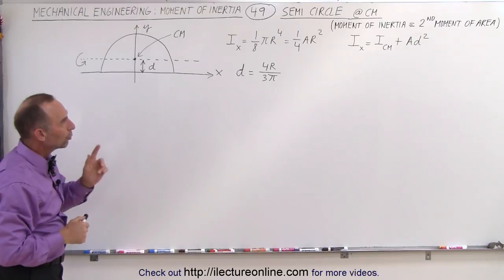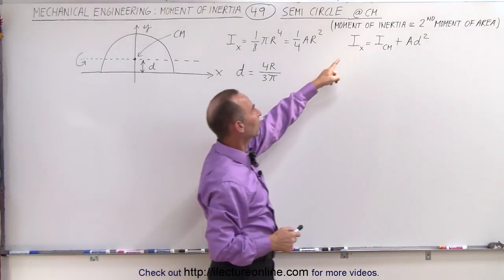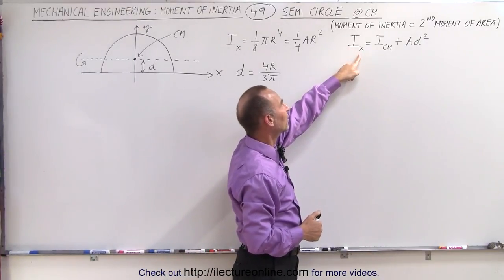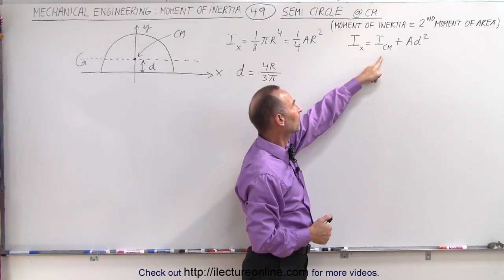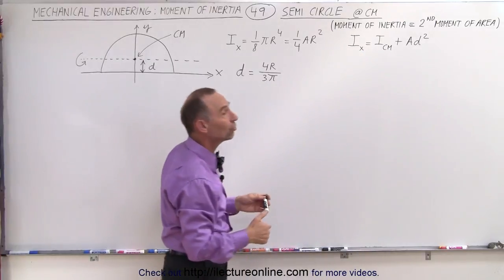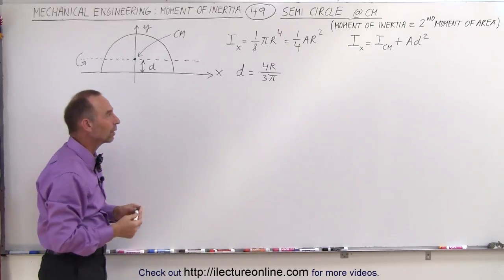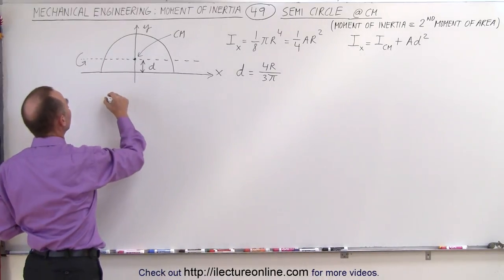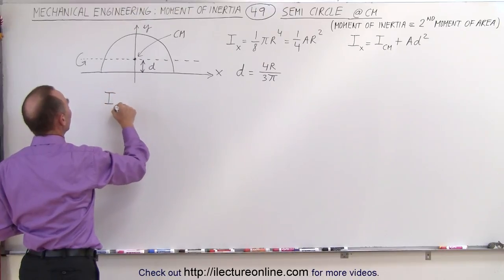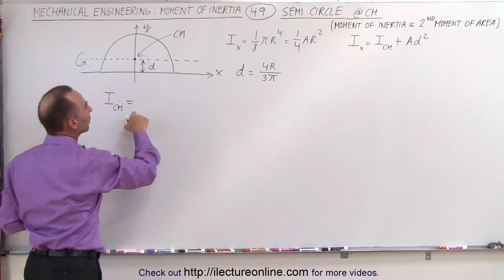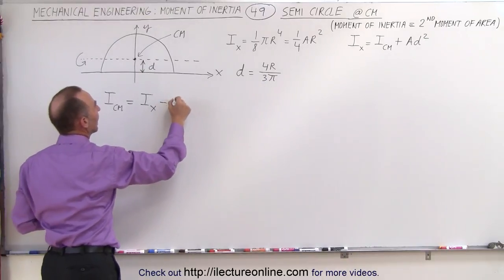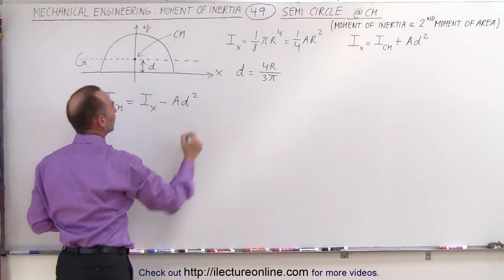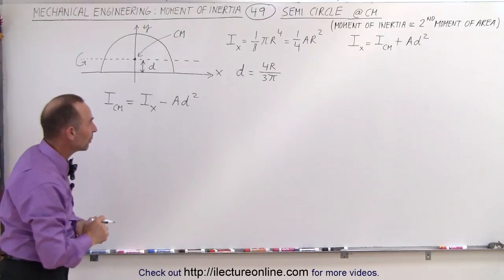Now what that means is we're going to use the parallel axis theorem, so that i at the x-axis, the moment of inertia at the x-axis, is equal to the moment of inertia at the center mass, plus a times d squared, or m times d squared if you have the mass. Which means we can then calculate the moment of inertia at the center mass by equating it to the moment of inertia at the x-axis minus a times d squared. So let's go ahead and do that and see what we get.